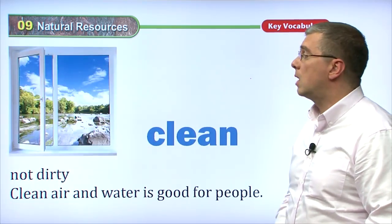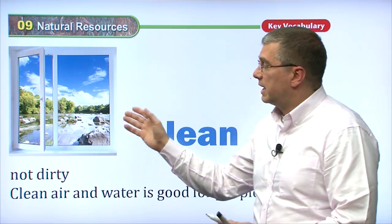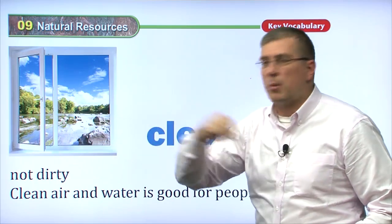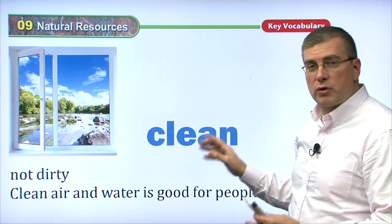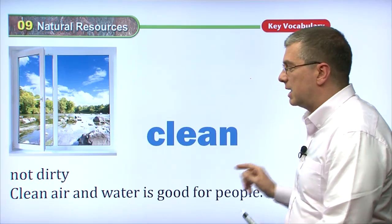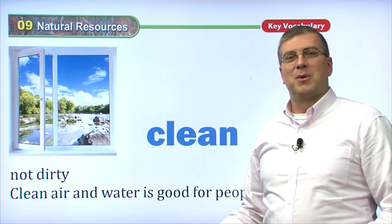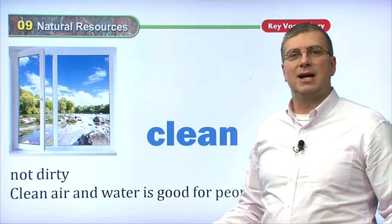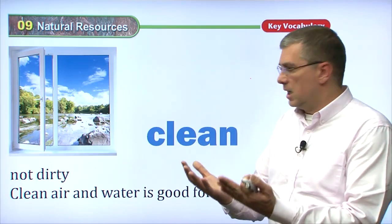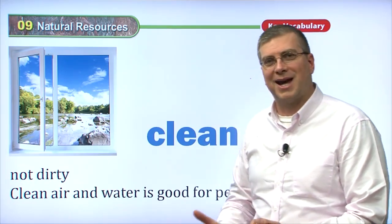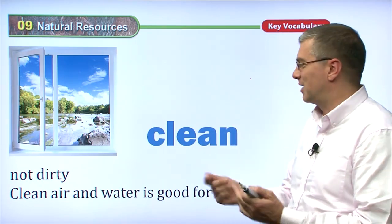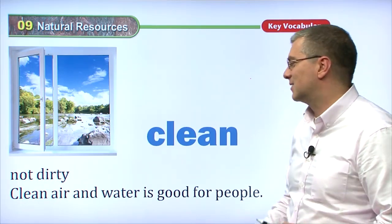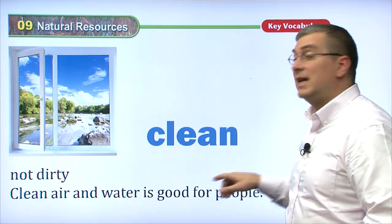We want to protect the environment. We want to keep our environment clean. We don't want to cut down too many trees. We don't want to use up all the water. We have to keep most of our environment clean. Clean, of course, means not dirty. When you go home after playing outside and it's time to eat dinner, your mom looks at your hands and says your hands are not clean — they're dirty. So go clean your hands, get rid of all the dirt, all the pollution, all the pollutants off your hands.